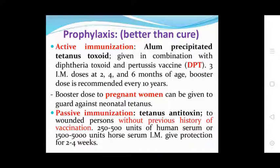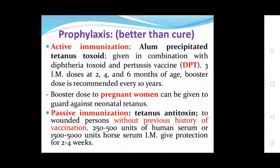Passive immunization: tetanus antitoxin is given to persons without a previous history of vaccination. Human tetanus immunoglobulin: 250 to 500 units. Horse antiserum: 1,500 to 5,000 units given IM, providing protection for two to four weeks.